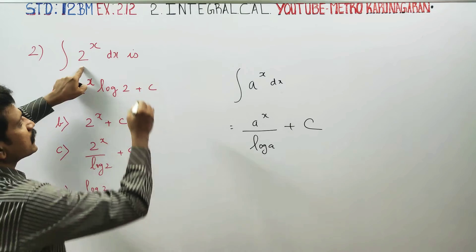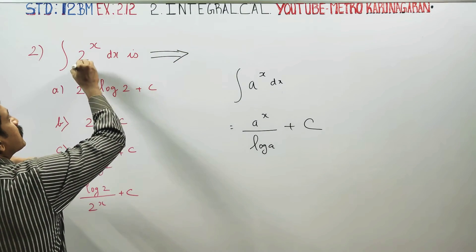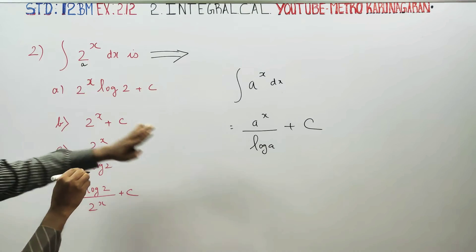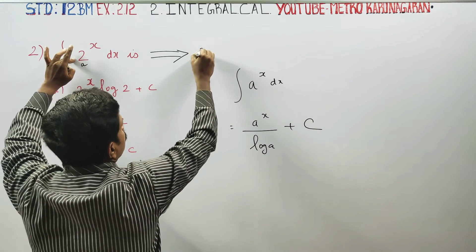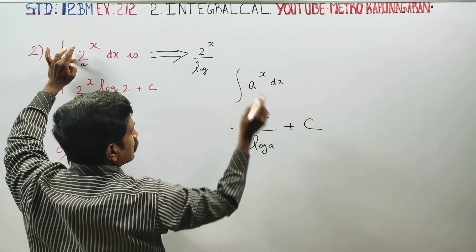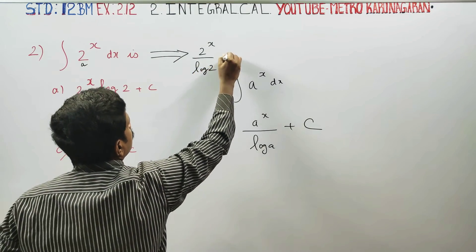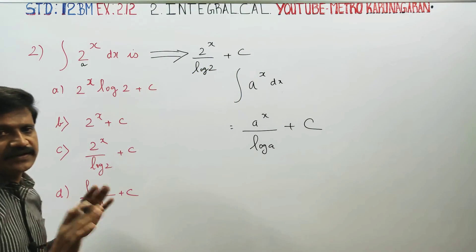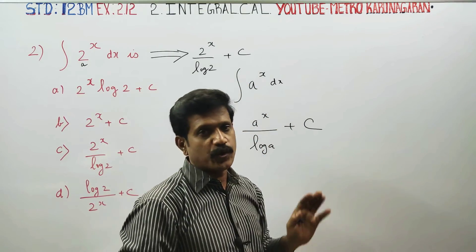In this sum, integral of a power x dx is a power x by log a plus c.